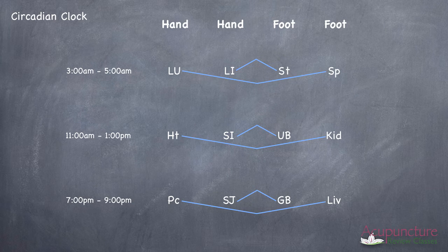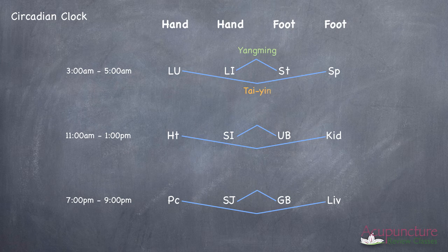So on the next page, you now put above the LI and the stomach, you're going to put Yang Ming. So now that you know that the LI is hand Yang Ming and the stomach is foot Yang Ming. Now you have that line that goes from the lung to the spleen. Under that line, you want to put Tai Yin. So you now know that the lung is hand Tai Yin and the spleen is foot Tai Yin.